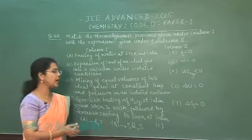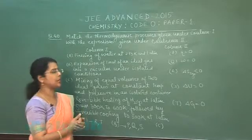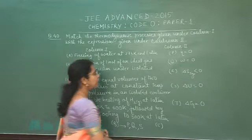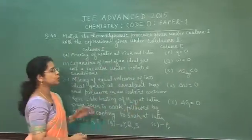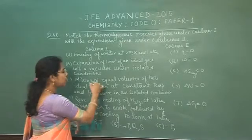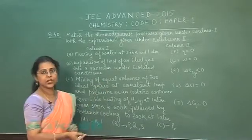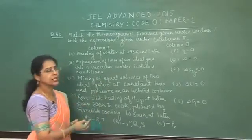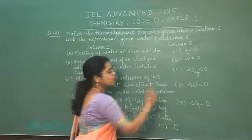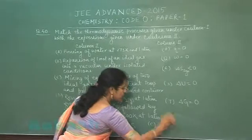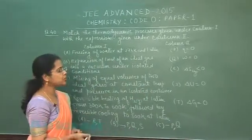We are mixing two ideal gases in an isolated container at constant temperature and pressure, it means work should be equal to 0, so this should be correctly matched with Q.